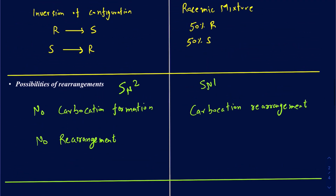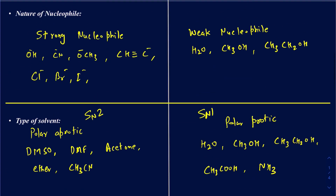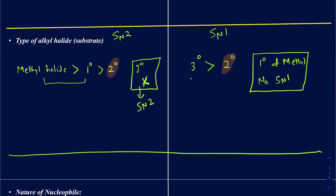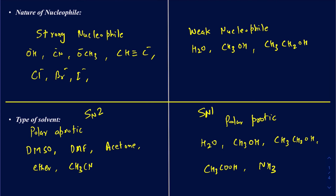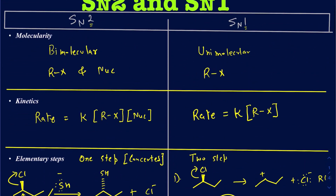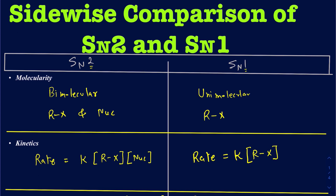So that's the overall comparison of SN1 and SN2 side by side. The most challenging part for students is determining whether something will go SN1 or SN2. The very first thing to look for is the type of alkyl halide: methyl or primary means SN2; tertiary means SN1. The problem comes with secondary alkyl halides — that's when you focus on the nucleophile and the type of solvent. We'll have another video going through multiple examples of how to determine SN1 vs. SN2.